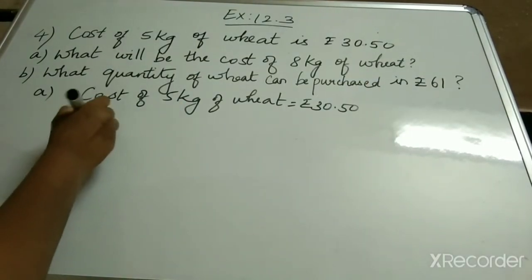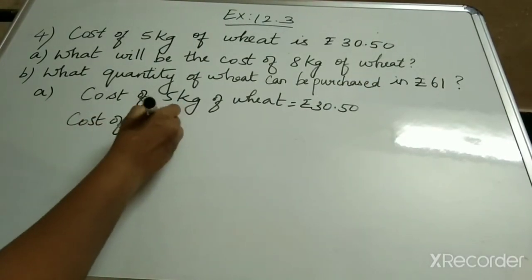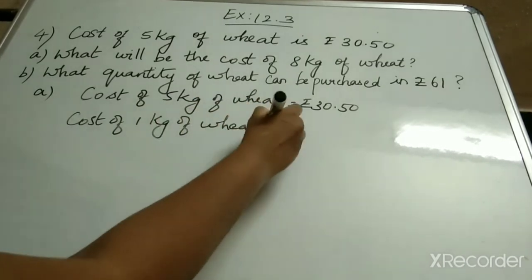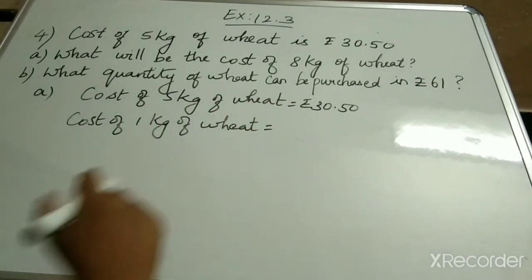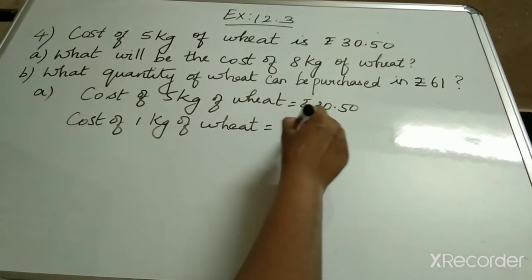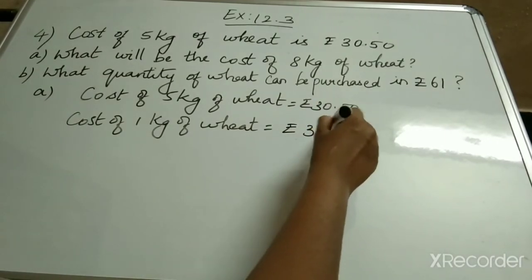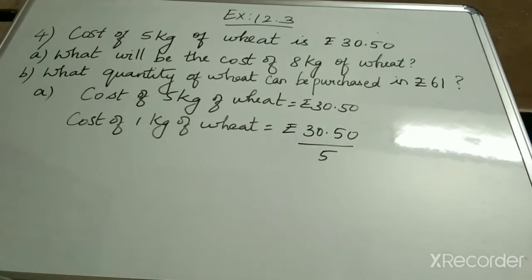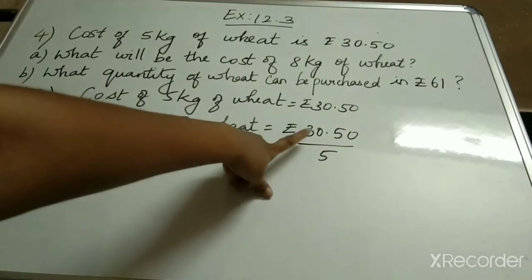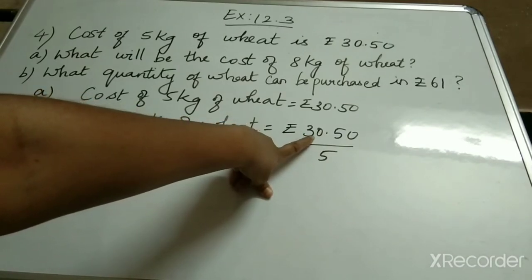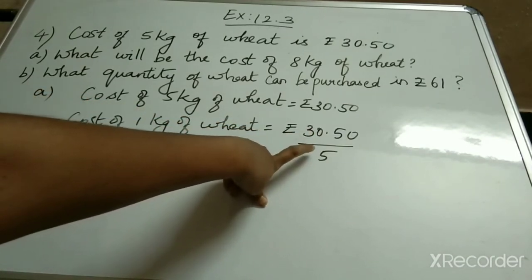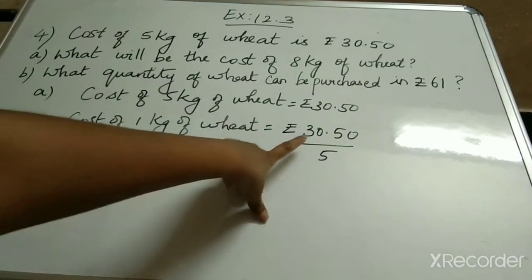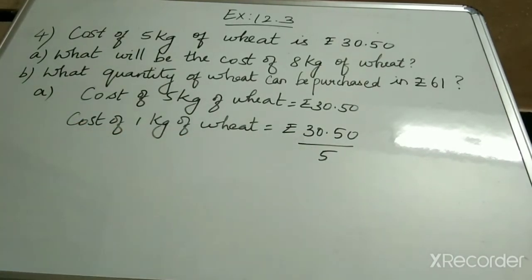Now we have to find the cost of 1 kg of wheat. How can we find the cost of 1 kg? We have to divide. So, rupees 30.50 divided by 5. Here 30.50 is a decimal number, so we have to divide it by 5. I will show you how to divide a decimal number.